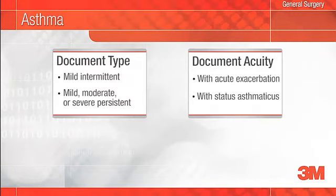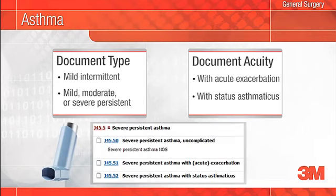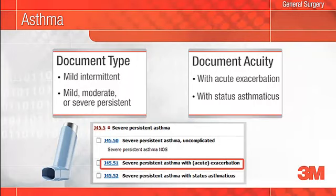Classification of asthma is an example of the use of updated terminology in ICD-10. Asthma is now classified as mild intermittent, or mild, moderate, or severe persistent. Documentation of acuity remains unchanged from ICD-9. You should continue to document the presence of an acute exacerbation or status asthmaticus. For example, a diagnosis of severe persistent asthma with acute exacerbation is classified to J45.51.